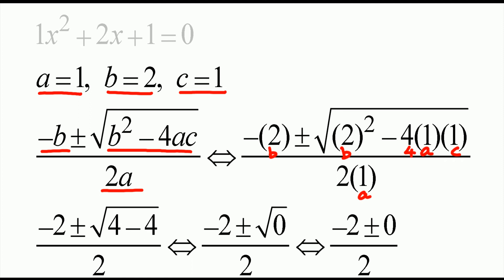So what is b²? 2² minus 4ac. What is a? 1. What is c? 1. So what is 2²? 4. What is 4 times 1 times 1? 4. So what is 4 minus 4? 0.